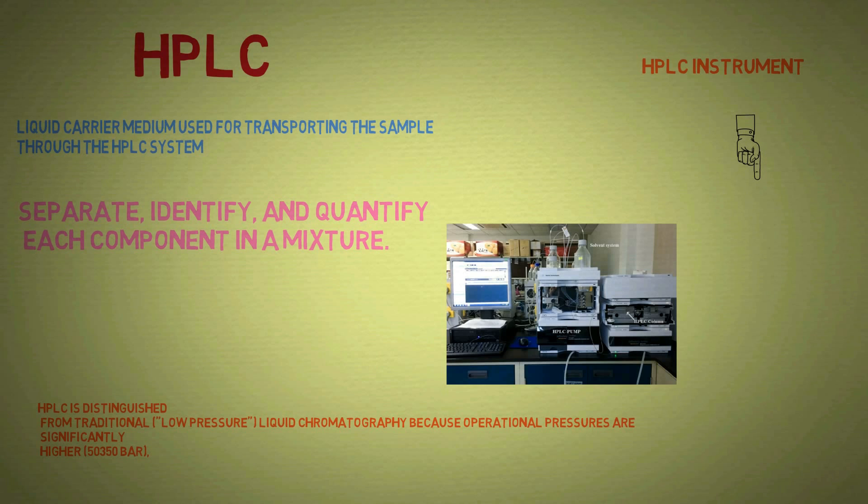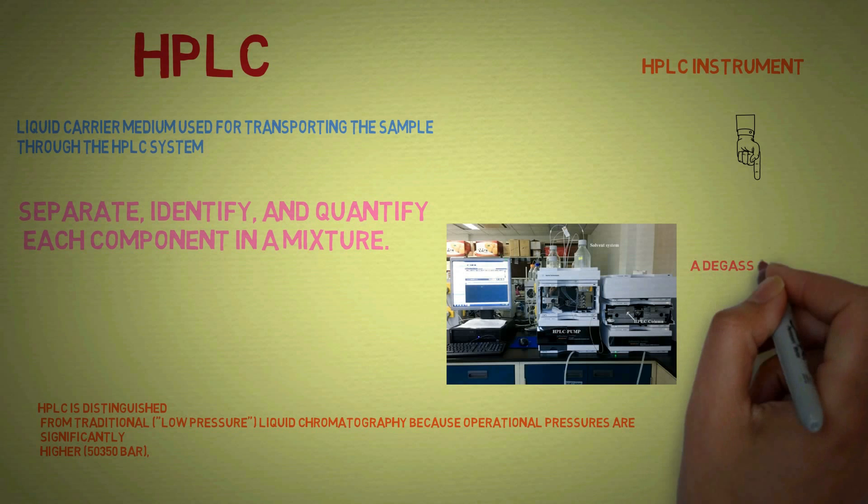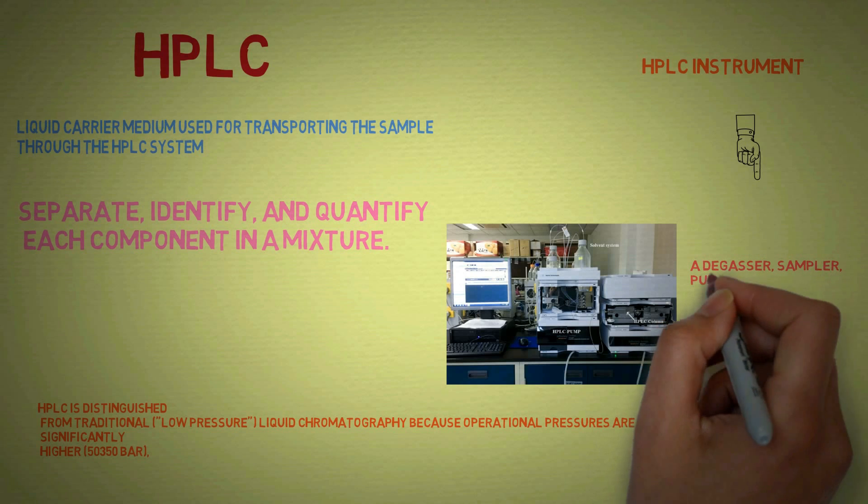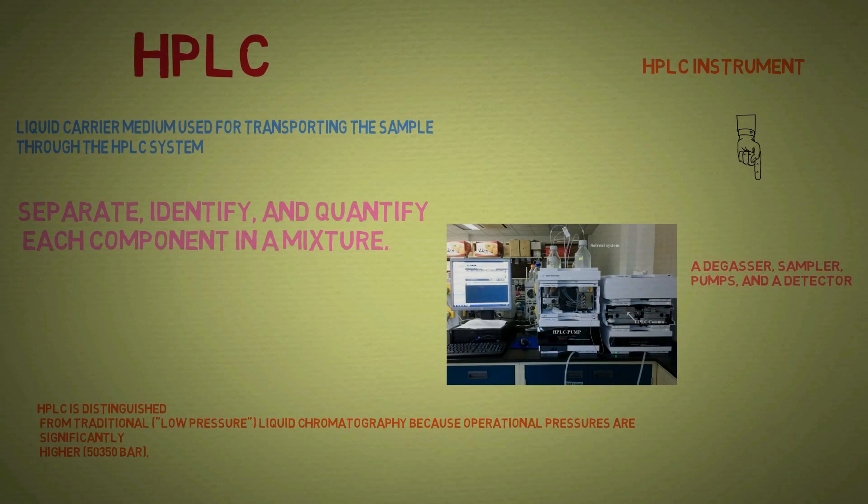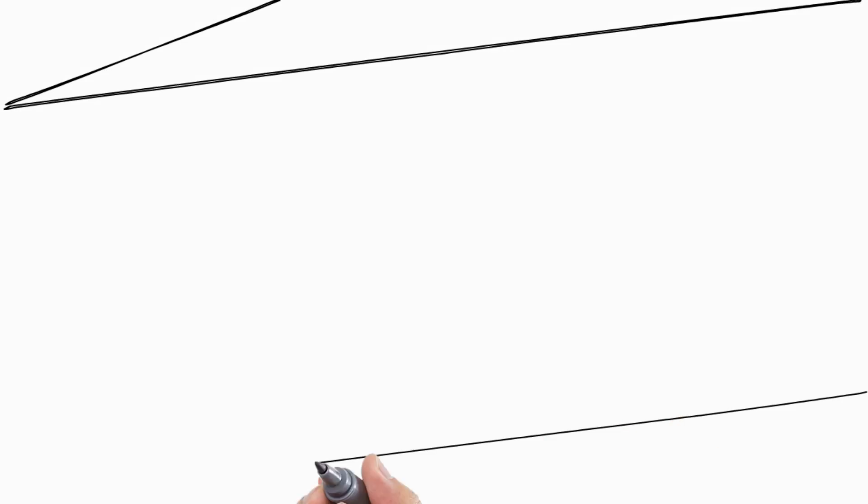The basic parts of HPLC are degasser, sampler, pumps, detector and recorder.